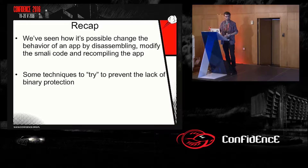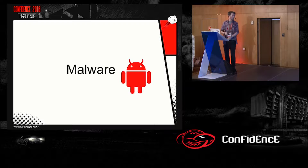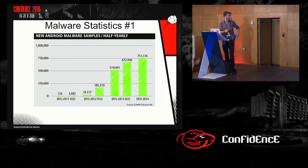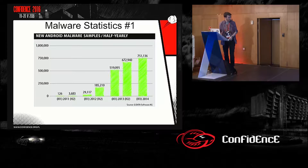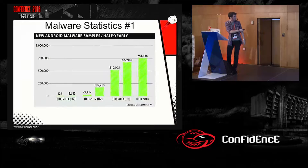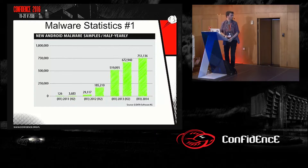For the second part of the presentation I will talk about Android malware. As you can see in this statistics graph, in 2011 there were about 126 malware samples in the first half and almost 4,000 in the second half. Year over year the malware has increased, reaching almost 750,000 malware in 2014, and probably in 2016 it will be even more. So this is something quite dangerous.